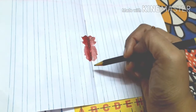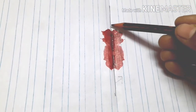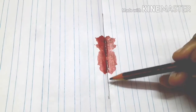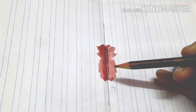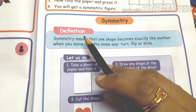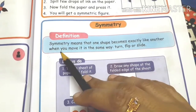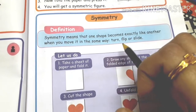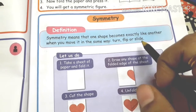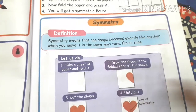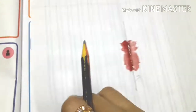This figure is equal on both sides, making it a symmetric figure. This is a symmetric figure.